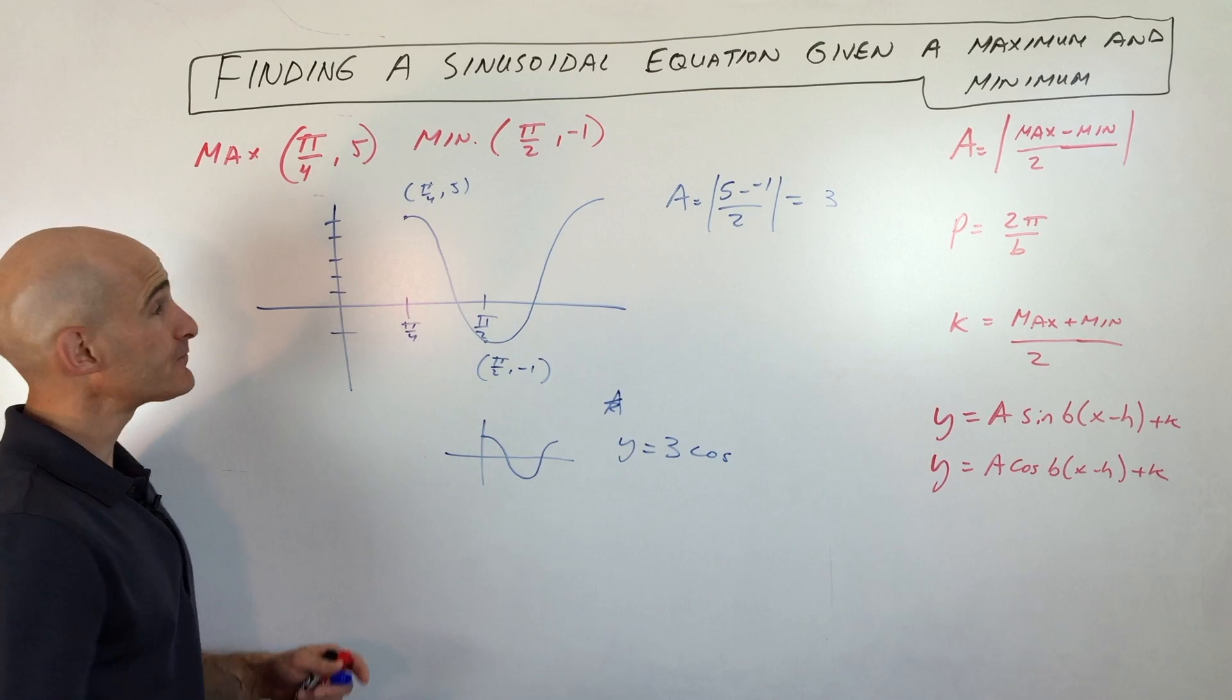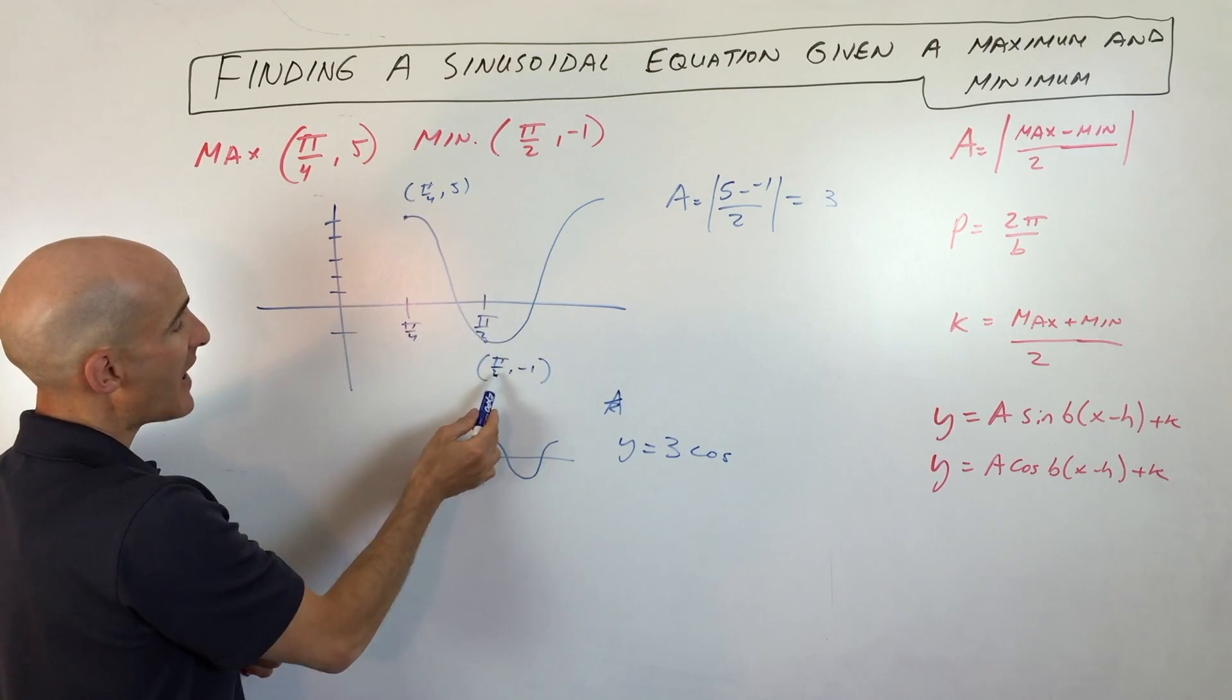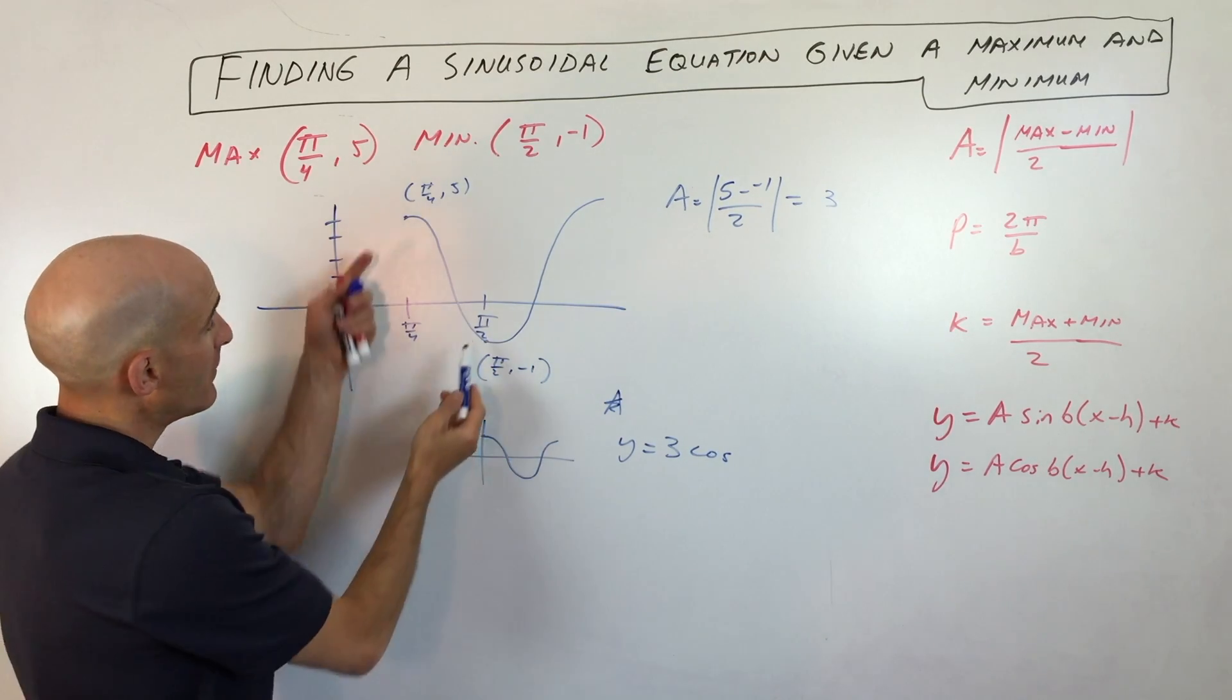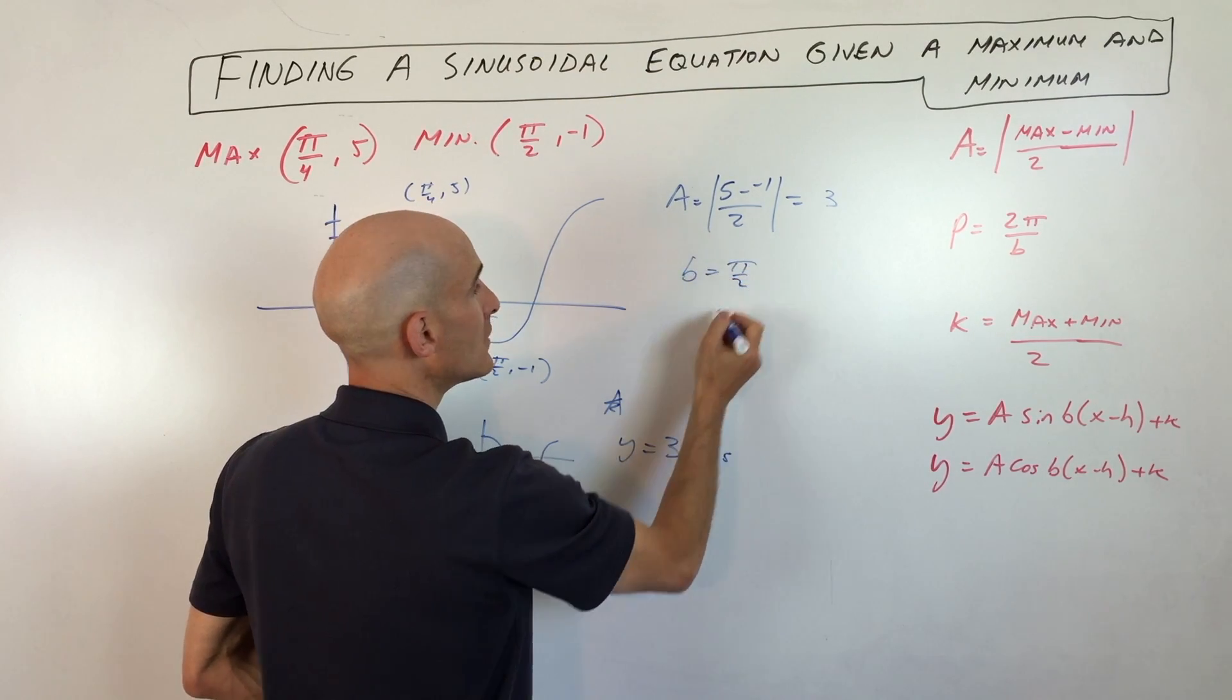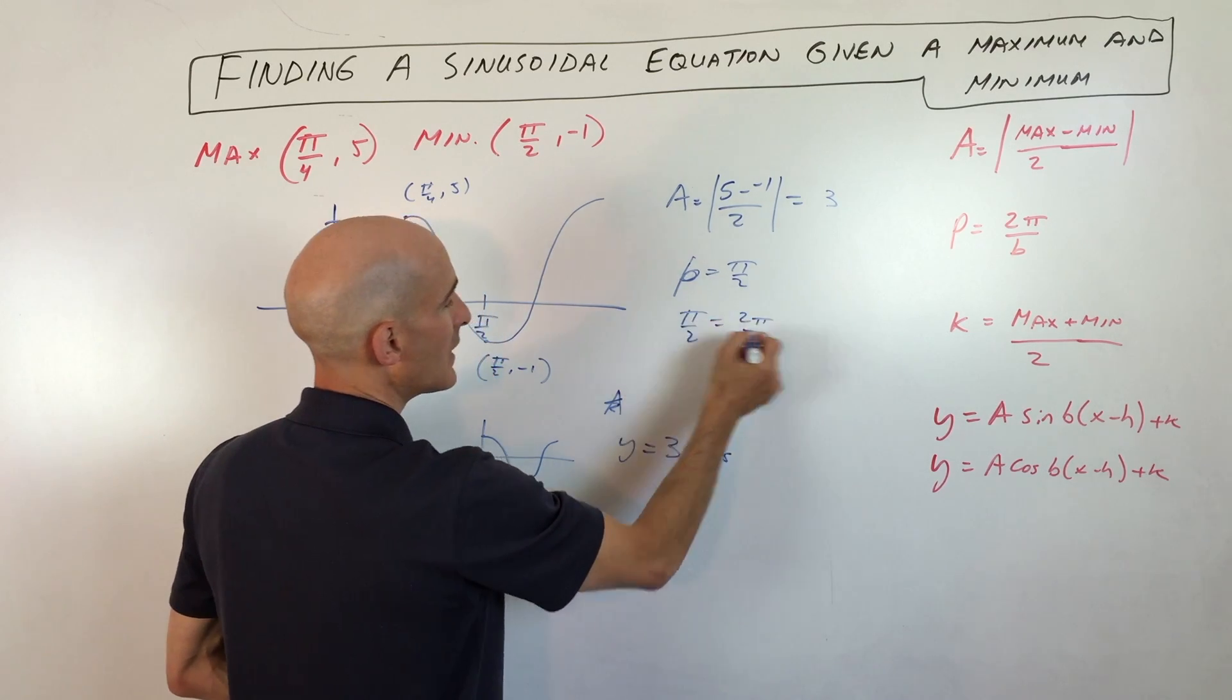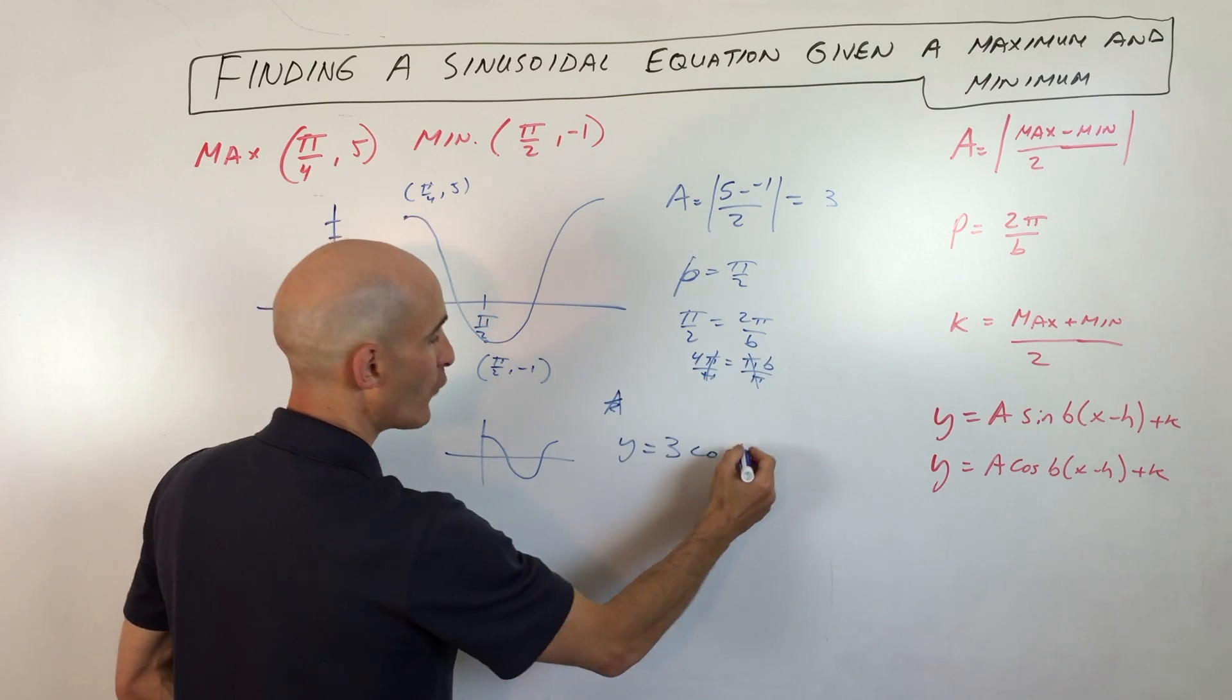Now we want to find the period. One thing I want you to notice is that when they give us the maximum and the minimum, see that horizontal distance from pi over 4 to pi over 2? If we subtract, that gives us pi over 4. But that's only half the period. The other half here I drew in. And so what you want to do is you want to take that and double it. So pi over 4 doubled gives us pi over 2. So that means our period is pi over 2. So to solve for our B value, we've got pi over 2 equals 2 pi over B. And if we cross multiply, you get 4 pi equals pi B. And if you divide by pi, you can see that B equals 4. So we have 4.